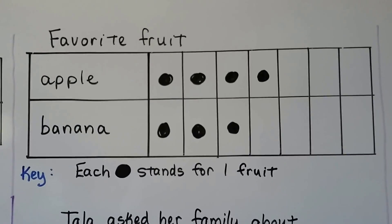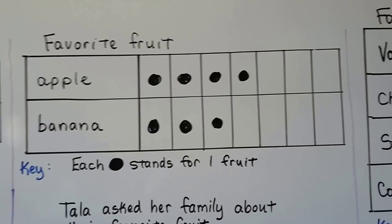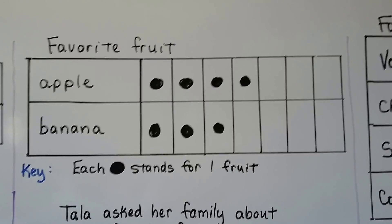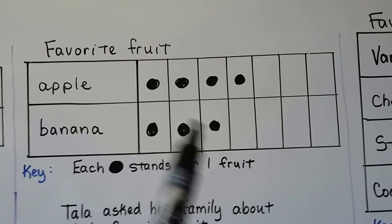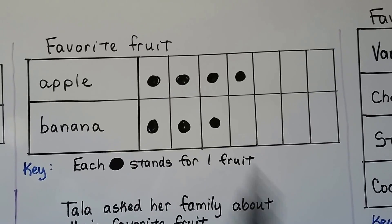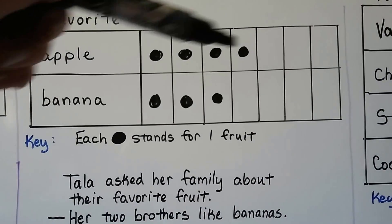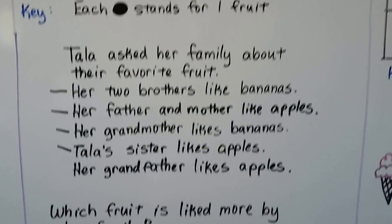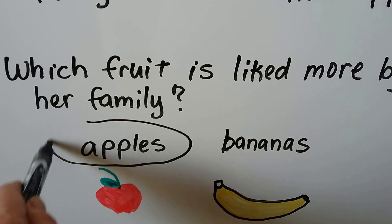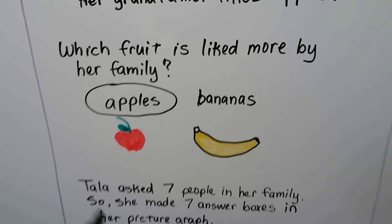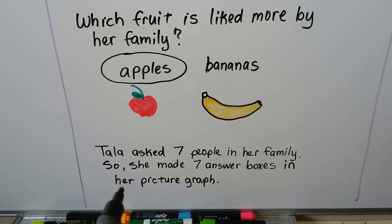Now we can see which one is the more favorite. It's the apple. There are four that like apple and only three that like banana. We can also look at this picture graph and tell how many people she asked, because it's a dot for each person — one, two, three, four, five, six, seven. So apple is liked more because there are more dots in the apple row. Which fruit is liked more by her family? Apples.